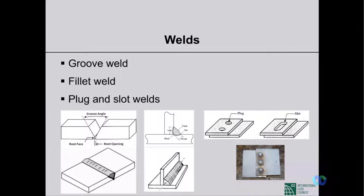There are different types of welding, but the building code mentions three types. First is groove weld — we create a groove in the parent material and weld into it. Second is fillet weld — we place members at different angles, often 90 degrees, and weld from the side.